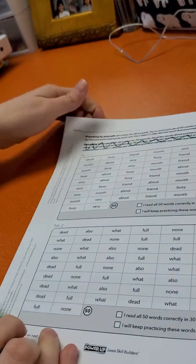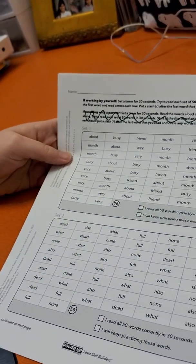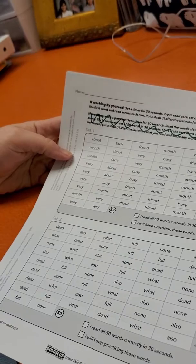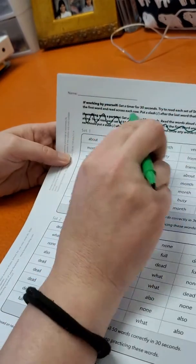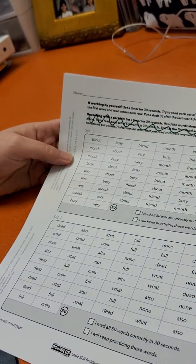You're going to time yourself. Set a timer for 30 seconds. Try to read each set of 50 words in 30 seconds. Start at the first word and read across each row, so that means you're going across. Put a slash after the last word that you read.